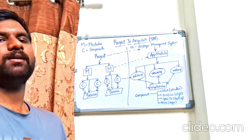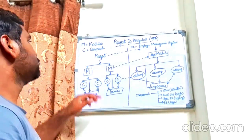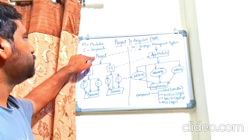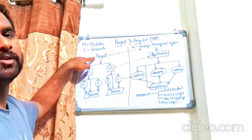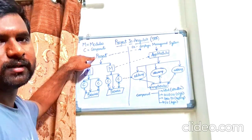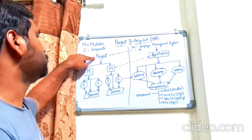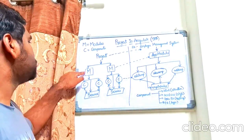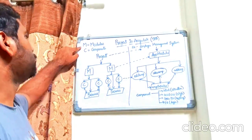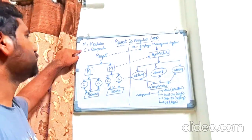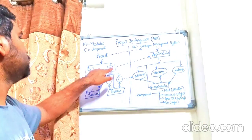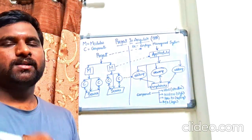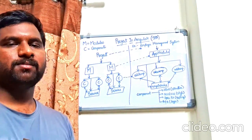As you can see on the board, here we are going to build an Angular project. This Angular project is being divided into different M's and different C's — these M's are nothing but the modules and these C's are nothing but the components. These modules are the logical part and sometimes help us to understand the main logic of that particular application.